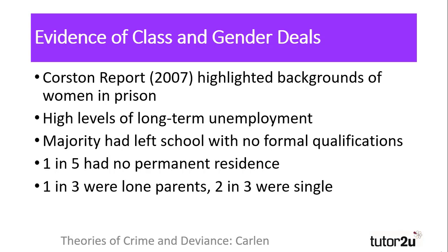While Carlin was writing in the early 1980s, evidence of the gender deal and the class deal can be found in more contemporary research, such as the Corston Report into the backgrounds of women in UK prisons. Many women in prison had a history of long-term unemployment, and nearly 70% left school with no formal qualifications — both indicators of the rejection of the class deal. The Corston Report also shows that one in five had no permanent residence prior to imprisonment, one in three were lone parents, and two in three were not in a relationship, indicating the rejection of the gender deal and providing compelling evidence of the hazards Carlin identifies with refusing to conform to society's expectations of women.